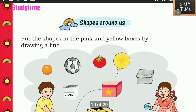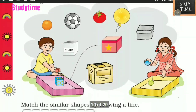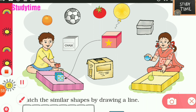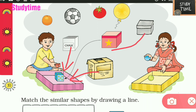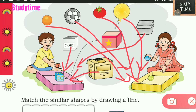Next, we'll discuss shapes around us. Put the shapes in the pink and yellow boxes by drawing a line. If it is a square shape, we'll place it in the pink box. If it is a round shape, we'll place it in the yellow box. Chalk and boxes should be placed in the pink color. Balloon, tomato, orange, and ball should be placed in the yellow color.